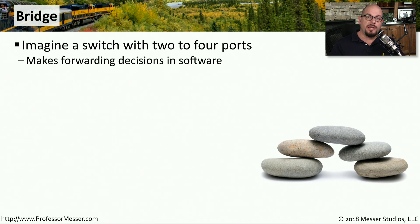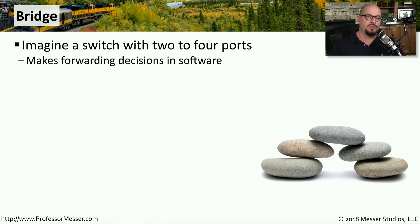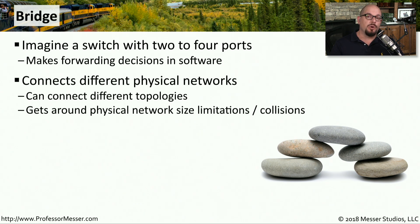In early networks using hubs, we would connect hub networks together using a bridge. Bridges make forwarding decisions based on the destination MAC address inside the ethernet frame — the same type of decision made by today's modern switches. Back then, bridges only had two or maybe four interfaces. These bridges allowed networks to be a bit smaller so each hub network could operate efficiently, and sometimes bridges were used to switch between topologies, such as moving from an ethernet network to a WAN network.